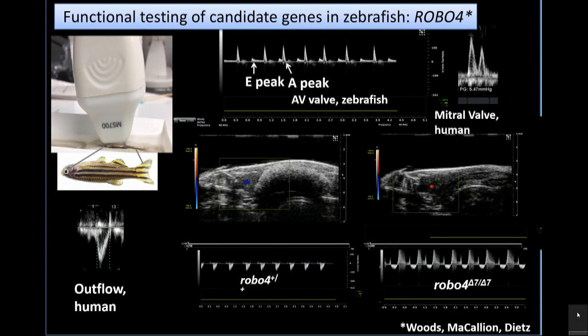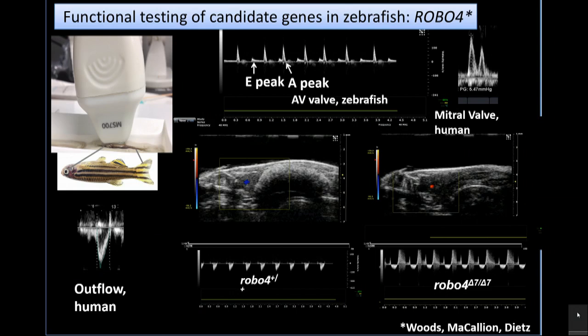Sometimes you can do it in other model organisms. This is work by my colleagues Courtney Woods, Annie McCallion, and Hal Dietz. They've been looking at the genes responsible for bicuspid aortic valve, which occurs in about 1 to 2 percent of the general population and is very heterogeneous genetically. They've been doing it in a zebrafish model and have learned how to phenotype these zebrafish using an EKG and echocardiogram. The gene Robo4 was a high-quality candidate, and when targeted in zebrafish, it caused abnormalities of the development of the aortic root and valve — giving strong evidence they were on the right track.